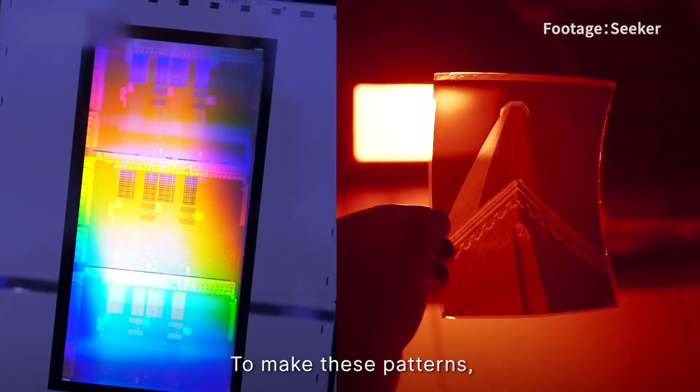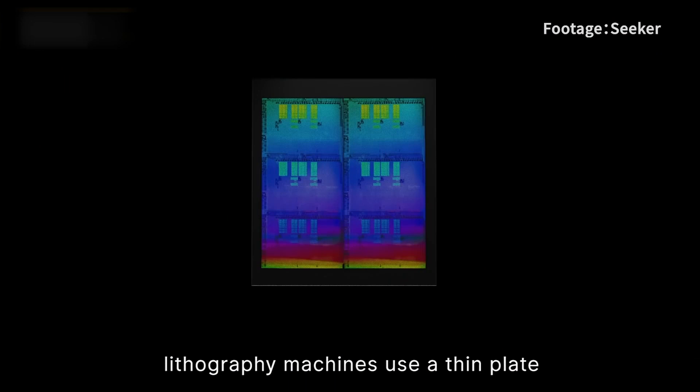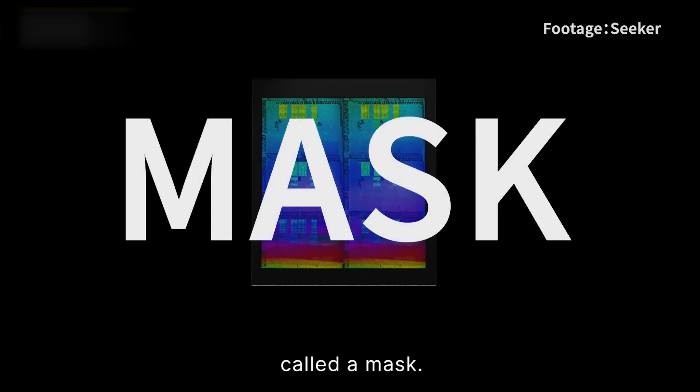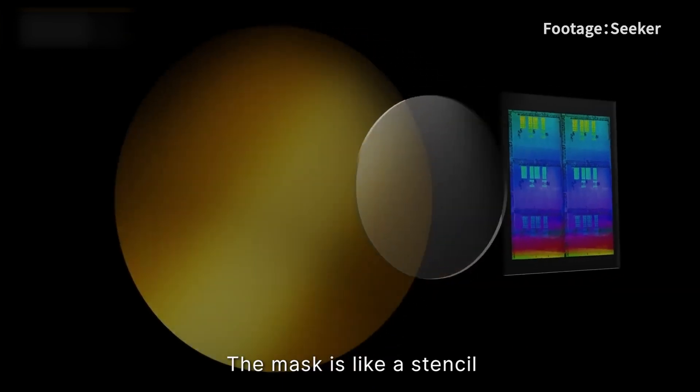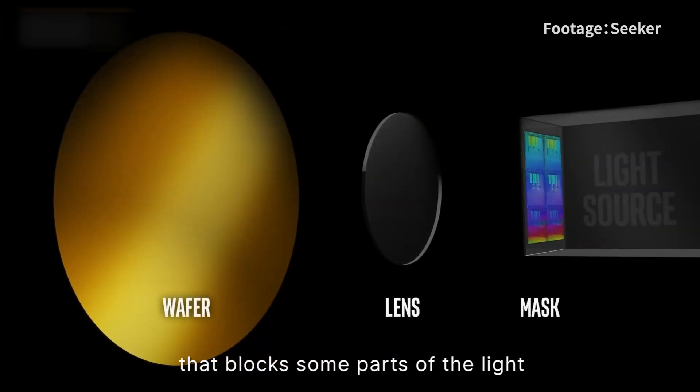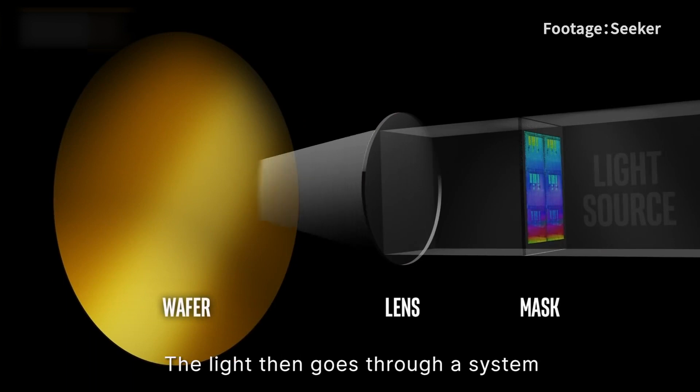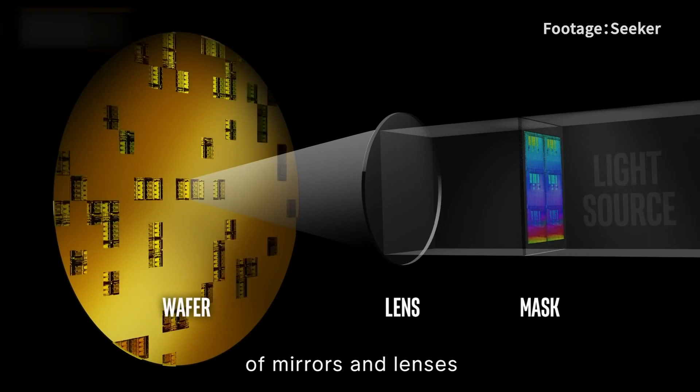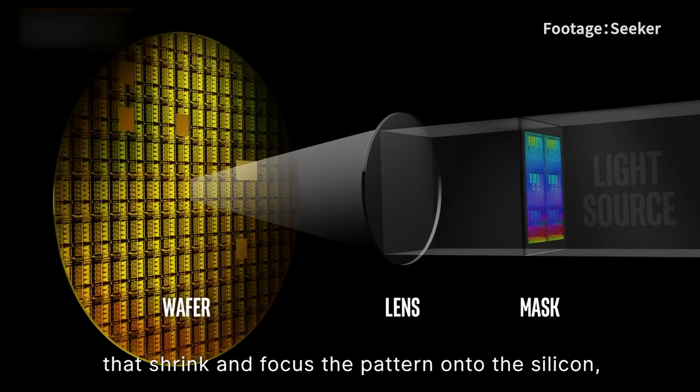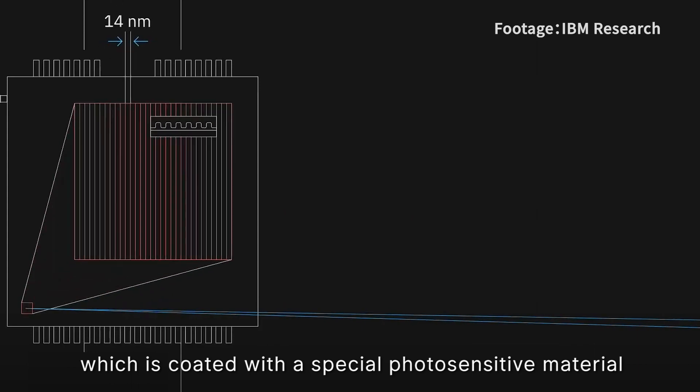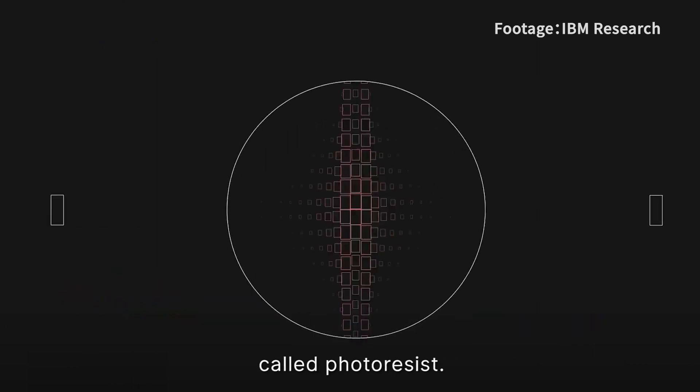To make these patterns, lithography machines use a thin plate with a circuit diagram on it called a mask. The mask is like a stencil that blocks some parts of the light and lets other parts through, creating a pattern of light and dark areas. The light then goes through a system of mirrors and lenses that shrinks and focuses the pattern onto the silicon, which is coated with a special photosensitive material called photoresist.